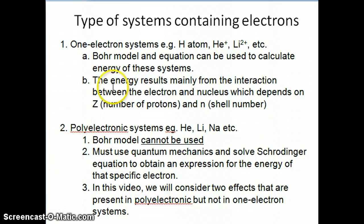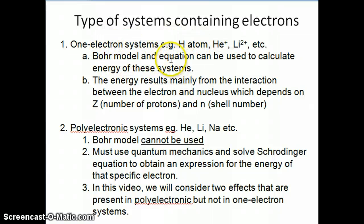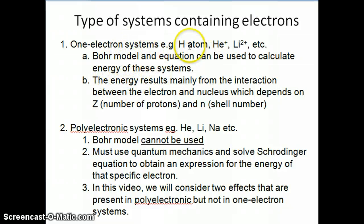Hi everyone. We're going to continue talking about the energy of electrons in an atom or an ion. In the previous couple of videos we talked about the energy of one-electron systems where there's only one electron in either the atom or the ion. This is not very useful because it only allows us to calculate the energy of systems that are not very interesting — aside from the hydrogen atom, helium plus, lithium 2 plus — we don't see a lot of them.